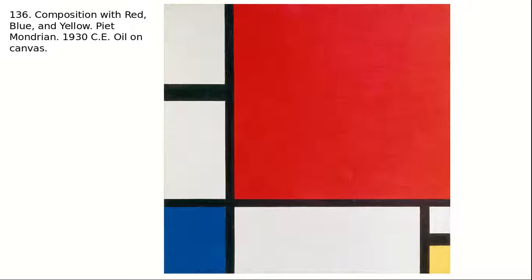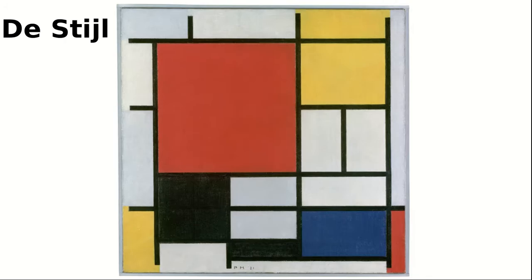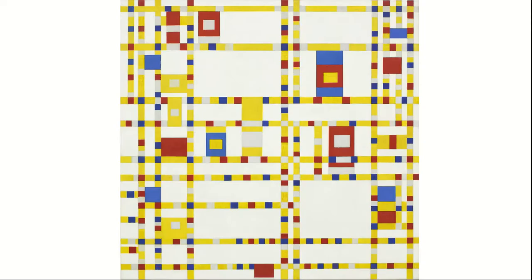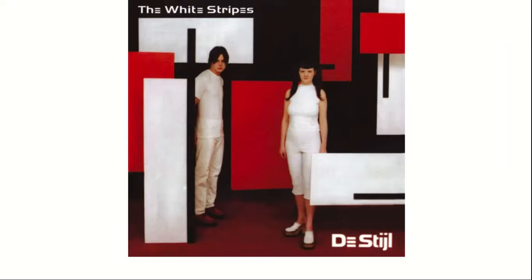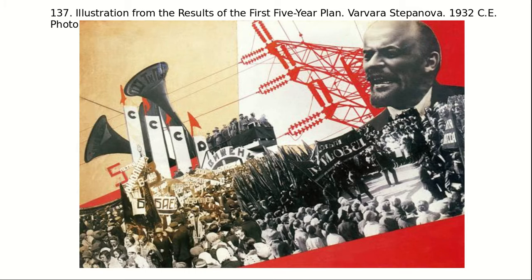Then Piet Mondrian, Composition with Red, Blue, and Yellow — the movement of De Stijl, Neo-Plasticism, breaking everything in the universe down into universal elements like colors, shapes, and lines. We also have graphic designer Varvara Stepanova and her photomontage critique of Stalin's Five-Year Plan, from The Results of the First Five-Year Plan.